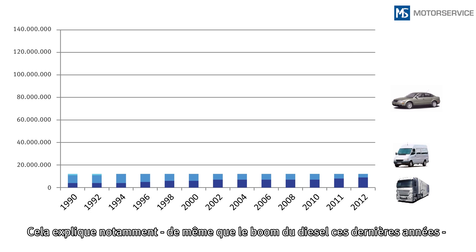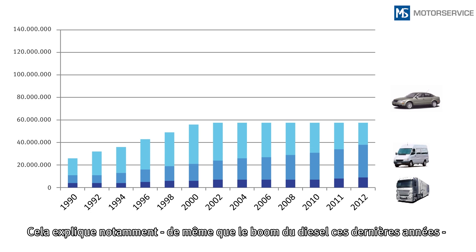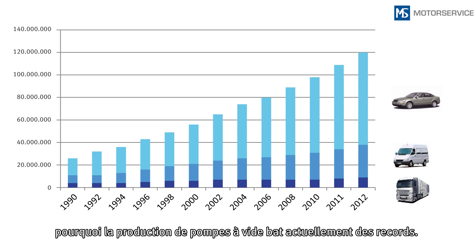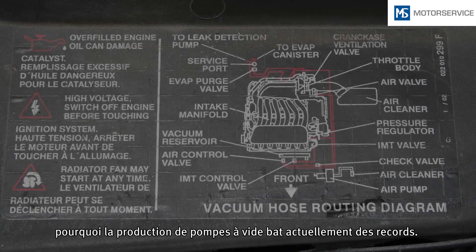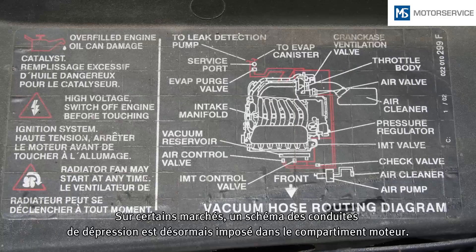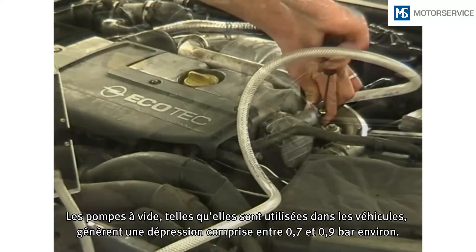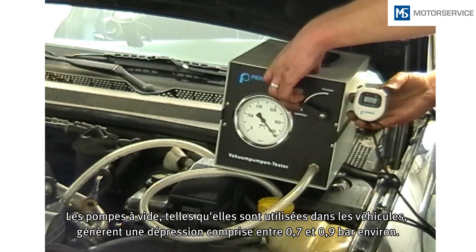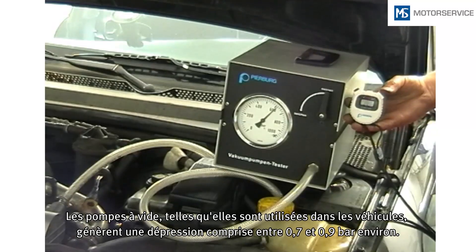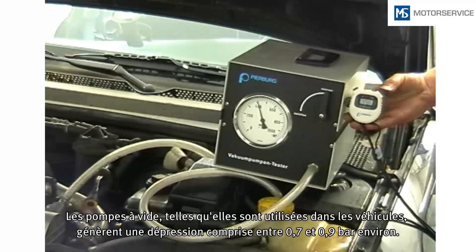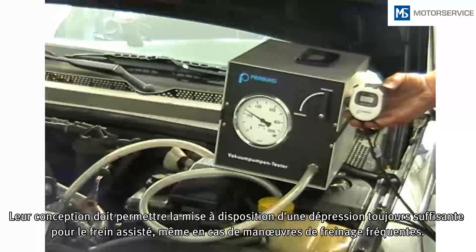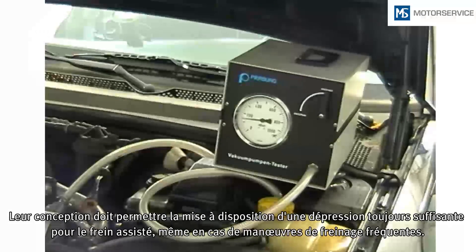For these reasons, and due to the rising popularity of diesel in recent years, more pumps are installed today than ever before. In some markets, a diagram of vacuum lines in the engine compartment is now a requirement. Vacuum pumps, as used in motor vehicles, produce a vacuum of approximately 0.7 to 0.9 bar. They must be designed to ensure that sufficient vacuum is available for the brake booster even with frequent braking maneuvers.